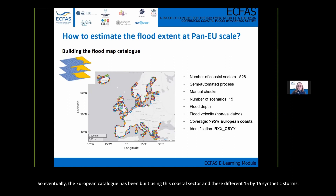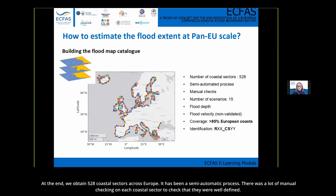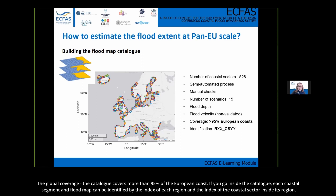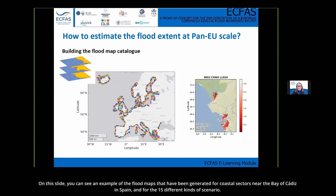The European Catalogue was built using these coastal sectors and 15 synthetic storm scenarios. In total, 528 coastal sectors were obtained across Europe through a semi-automatic process with extensive manual checking. For each coastal sector, 15 scenarios produced 30 flood maps — 15 for flood depth and 15 for flood velocity. The catalogue covers more than 95% of the European coast. Each coastal segment and its flood maps can be identified by the index of its region and coastal sector. On this slide, you can see example flood maps generated for a coastal sector near the Bay of Cadiz in Spain for all 15 scenarios, showing how flood maps vary depending on the synthetic storm parameters.